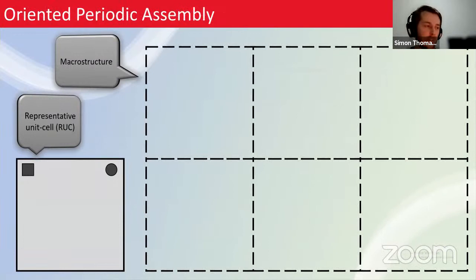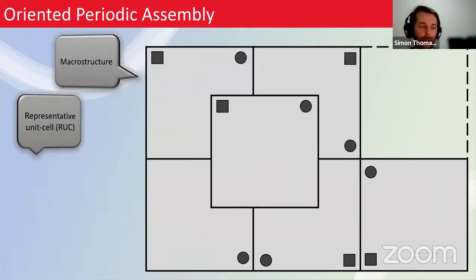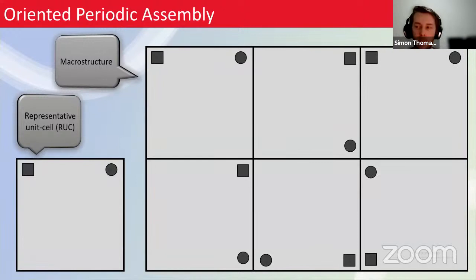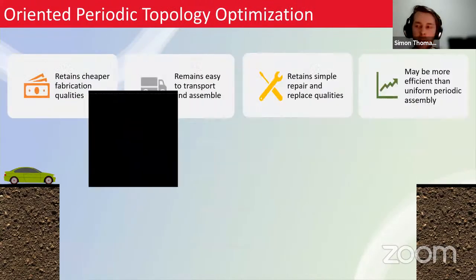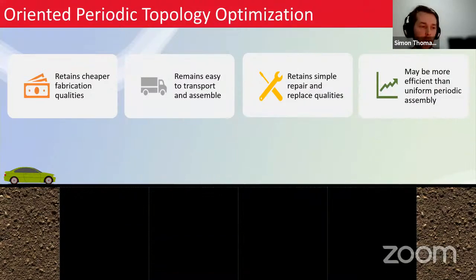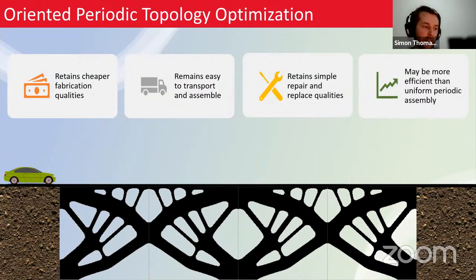We could orient unit cells in any particular way — for example, a 90-degree rotation — as long as they still fit within their region. Each unit cell location can have a different orientation state, giving the same periodicity in the macro structure but a very different macro structural layout. This is applicable to squares, rectangles, triangles, and hexagons. For simplicity, we use square unit cells.